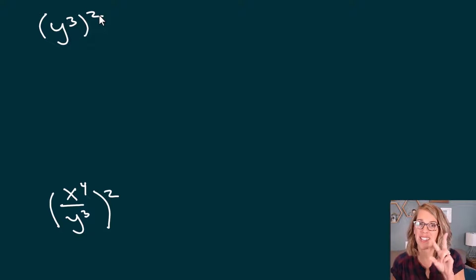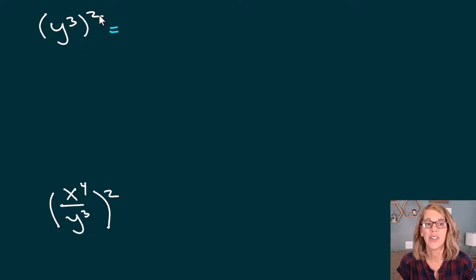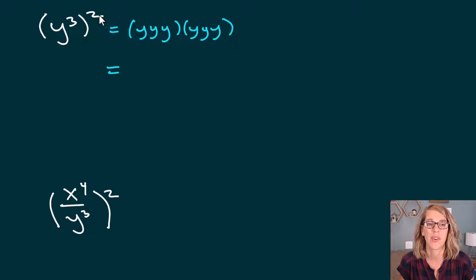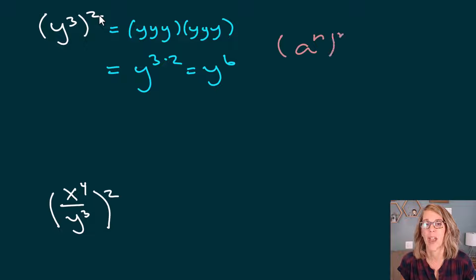In this next one, we've got powers. I've got y cubed to the second power. Literally there are three y's times itself, and if you count that up, you end up with six of them. The property makes it really nice — I'm going to multiply those powers together and I get y to the sixth. So a to the n, all to the mth power, is equal to a to the n times m.